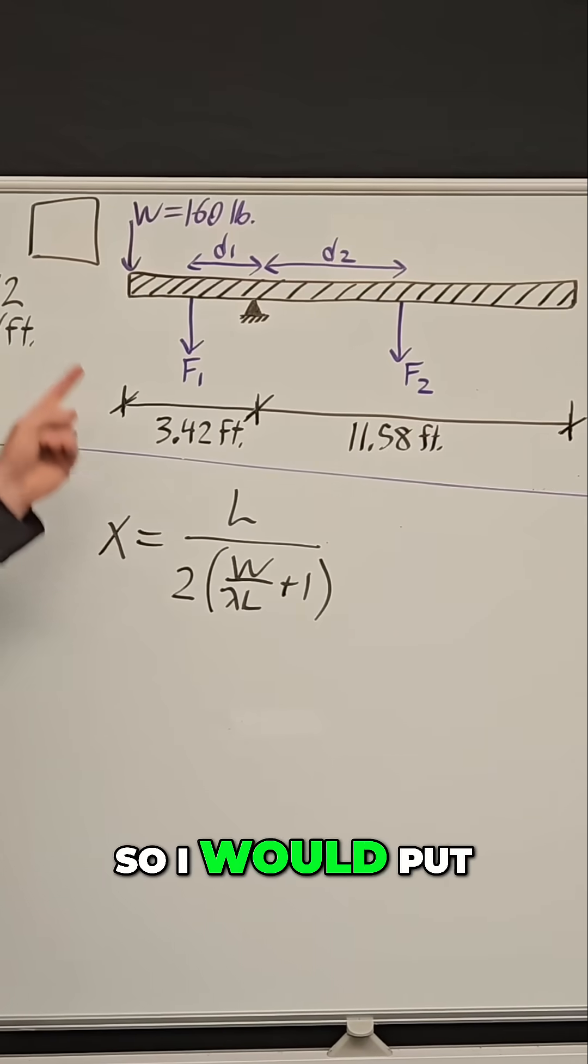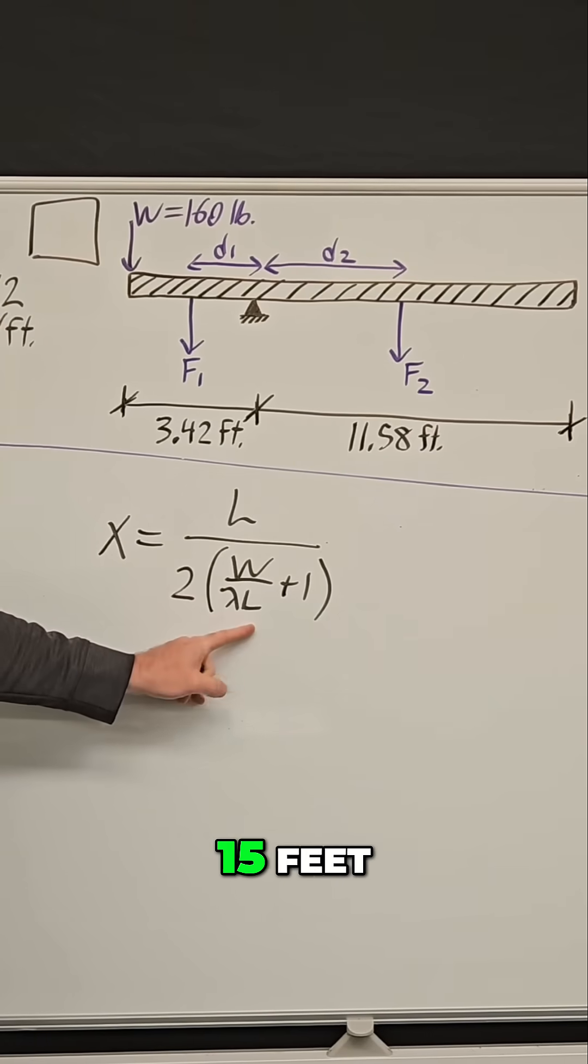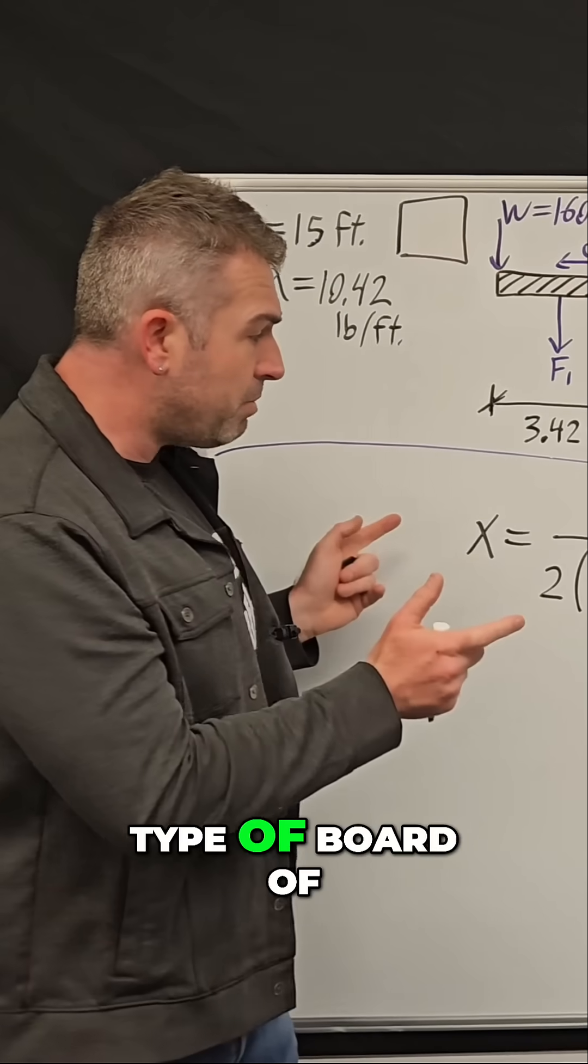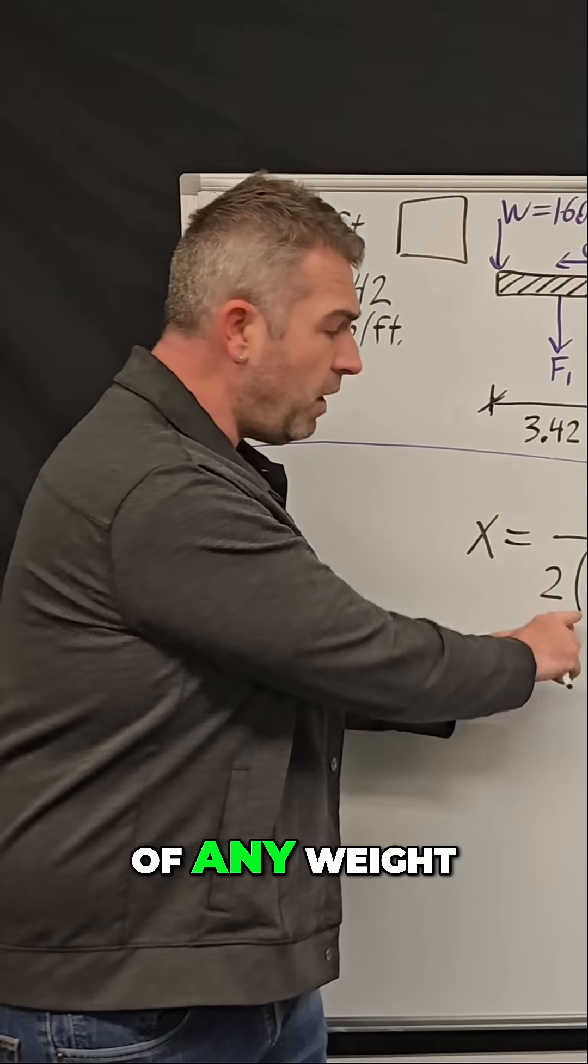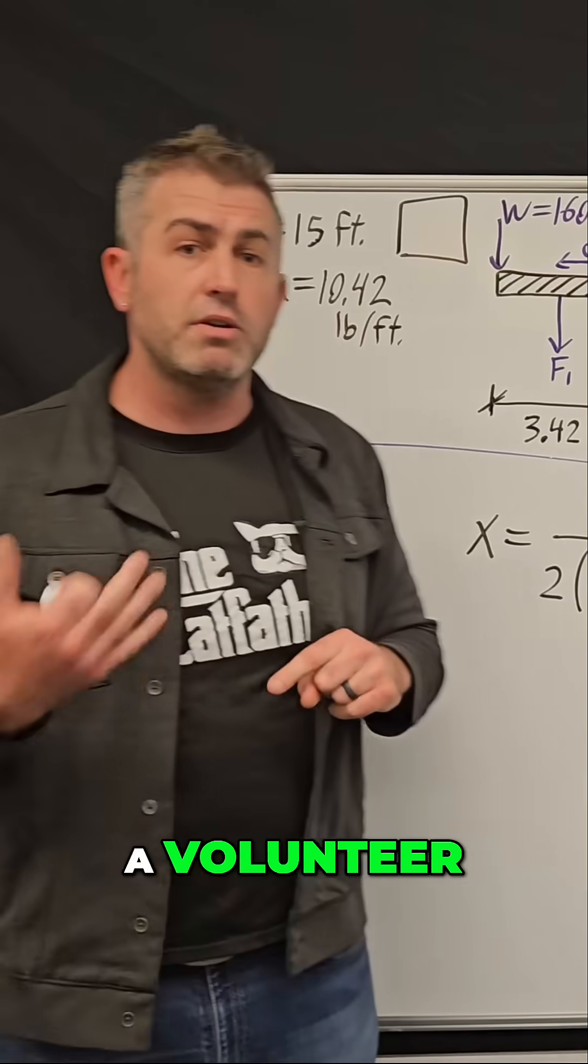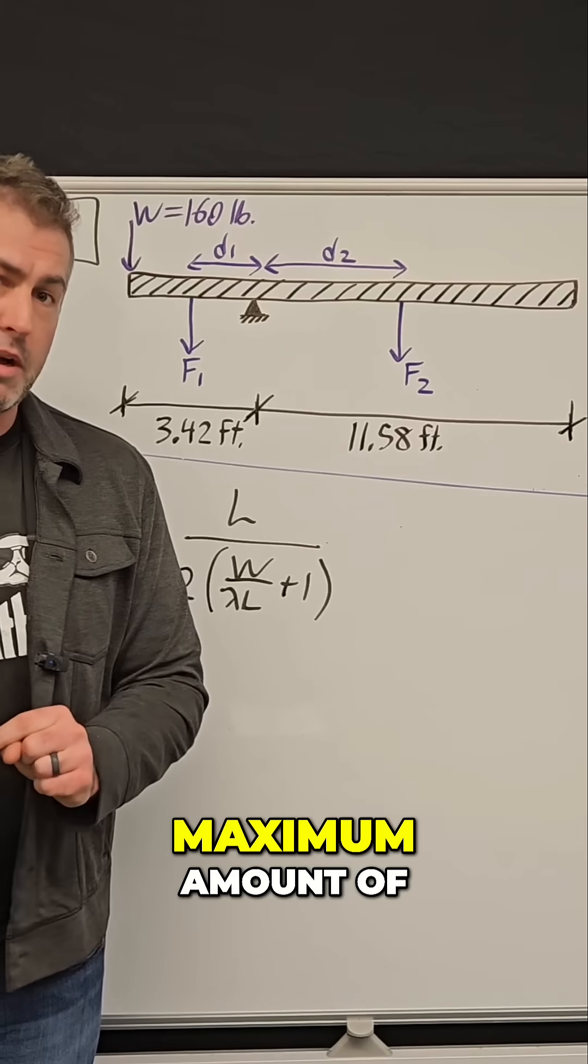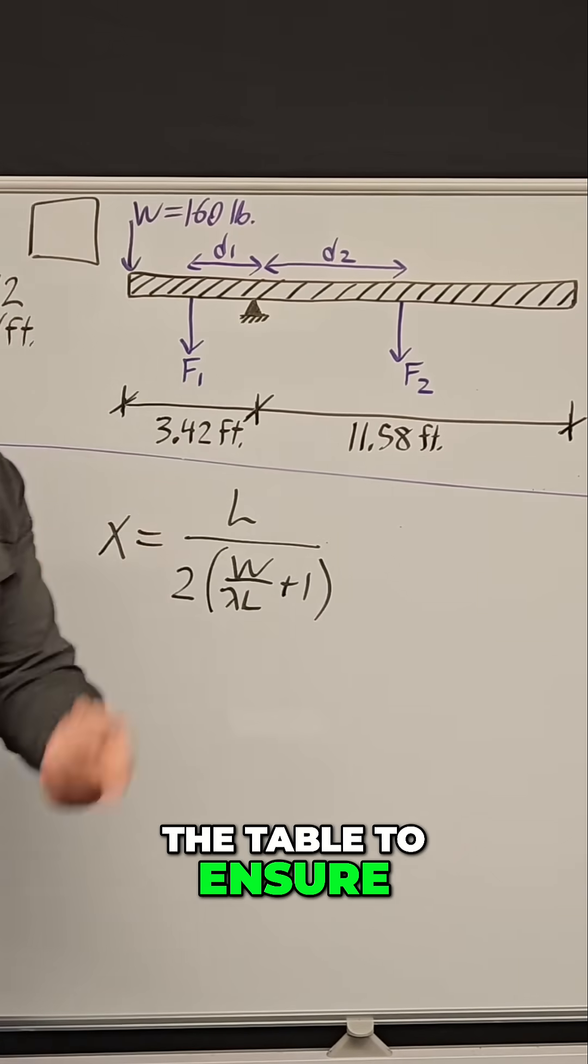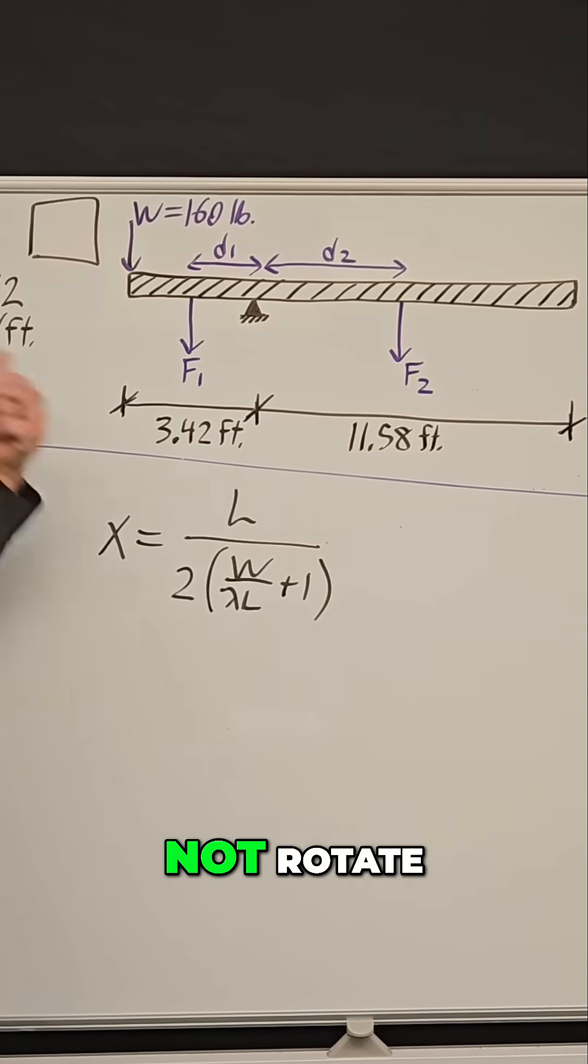L again is the length of the board. So I would put a 15 here, 15 feet and then plus one. So basically for any type of board of any length, of any weight and any person as a volunteer, you can actually calculate the maximum amount of length that you can hang your board over the table to ensure that this thing does not rotate.